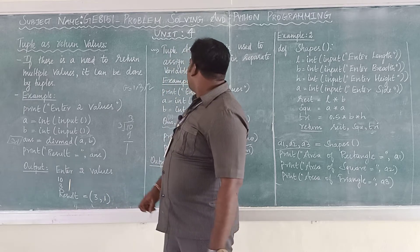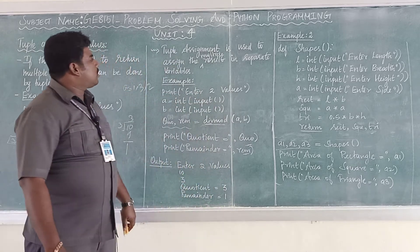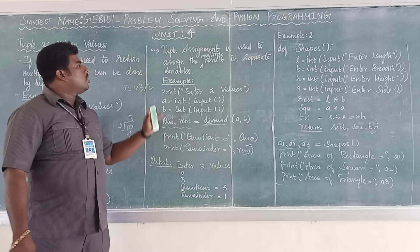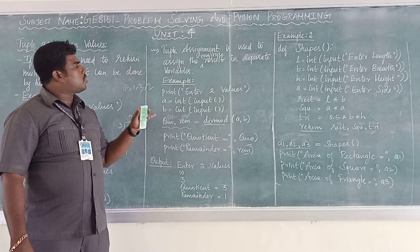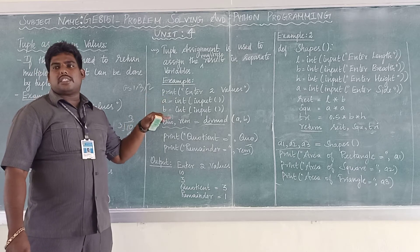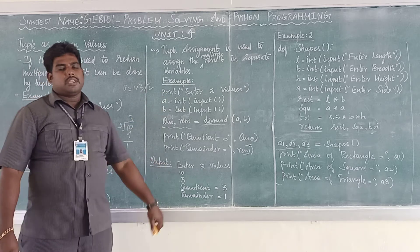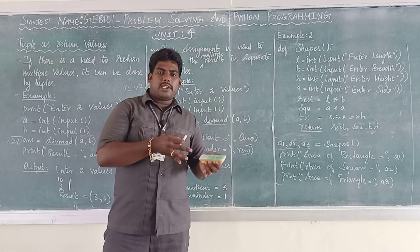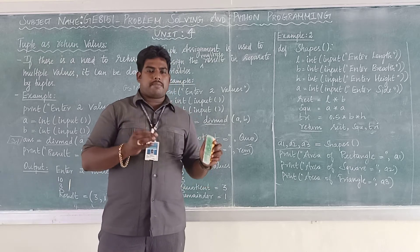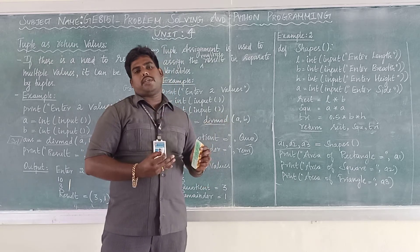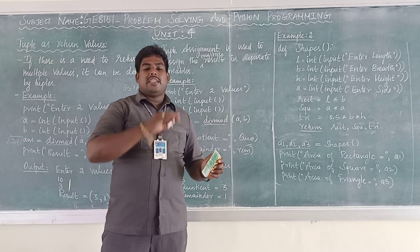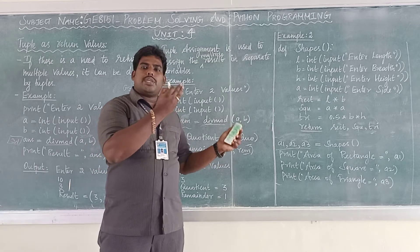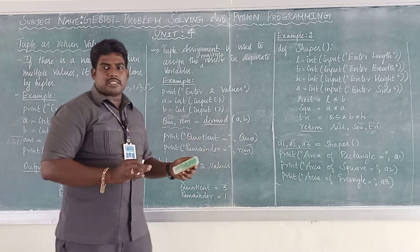The next one is the second type: Tuple assignment. In the second unit I already taught you what is Tuple assignment. Tuple assignment is used to assign multiple results to separate variables. If you want to assign multiple values to multiple variables — for example, A and B are two variables, and 10 and 20 are two values — in a single line you can assign 10 and 20 to A and B. That is Tuple assignment.